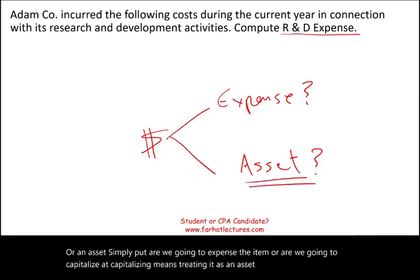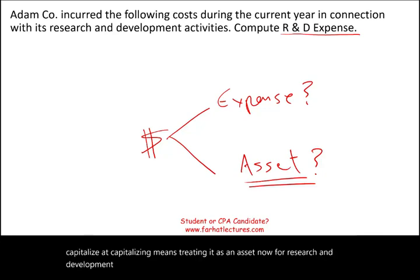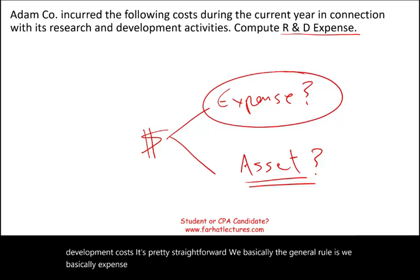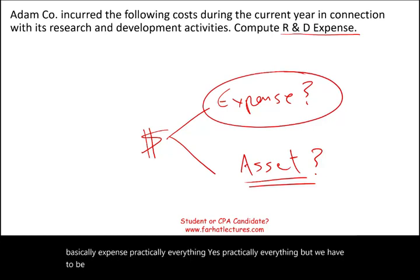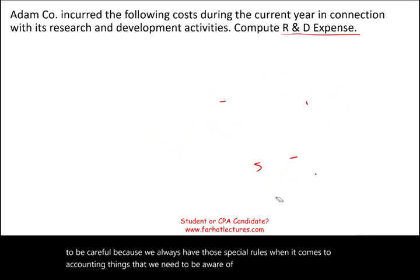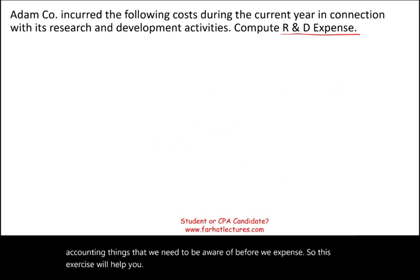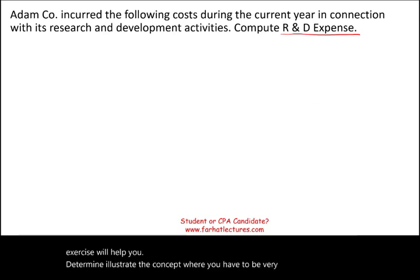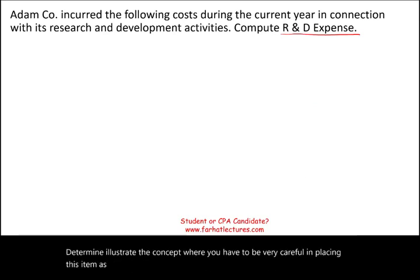For research and development costs, it's pretty straightforward. The general rule is we basically expense practically everything. But we have to be careful because we always have those special rules when it comes to accounting — things that we need to be aware of before we expense. This exercise will illustrate the concept where you have to be very careful in placing an item as an expense or as an asset.